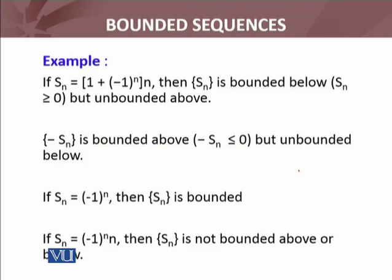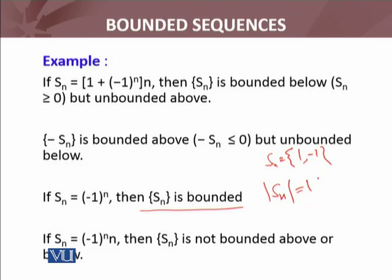We have two more examples. If S_N = (-1)^N, then S_N is bounded. The absolute value of S_N: if N is even, the answer is 1; if N is odd, the answer is -1, so the absolute value is still 1. All terms of the sequence are either 1 or -1. So if B is any real number greater than 1, then all terms of the sequence are less than B in absolute value — hence S_N is bounded.